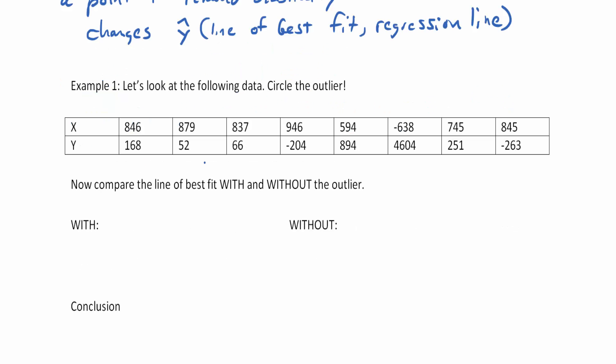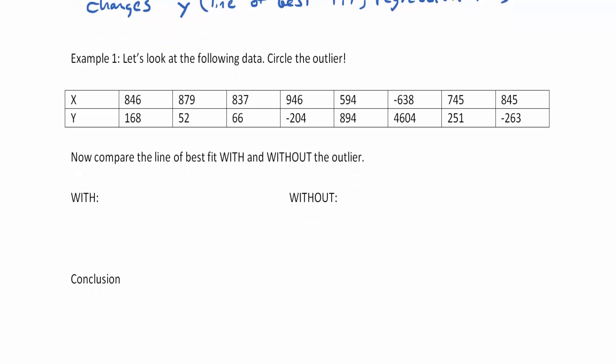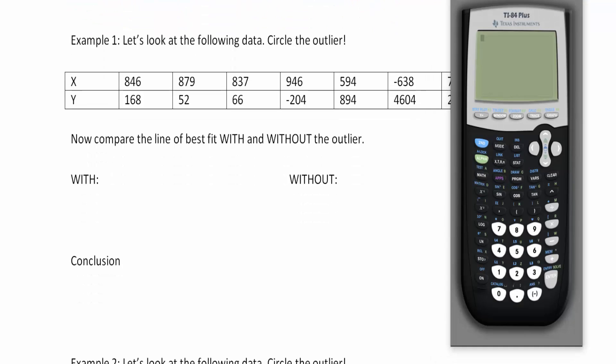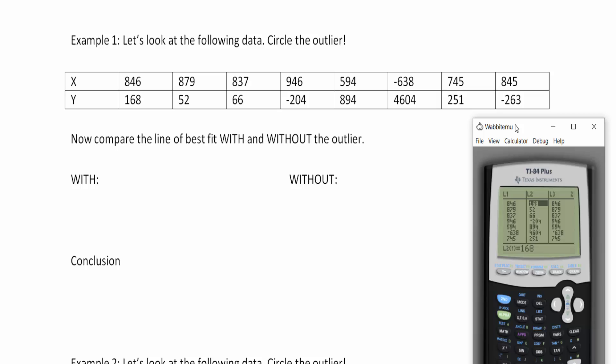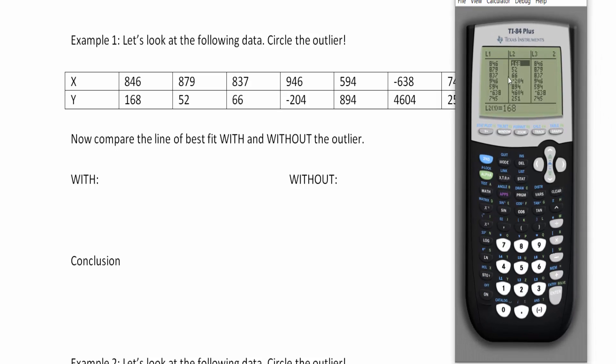So let's look at the following data. Now the first thing we need to do is to identify what the outlier actually is. Now I've typed this data into my list 1 and list 2 of the calculator. So I've got everything in list 1 and list 2 into the calculator. Now just by looking at the data in list 1 and list 2, we maybe not get a good example of what that looks like. But I'm going to make sure that I have my y equals cleared out. Make sure my plot 1 is on.